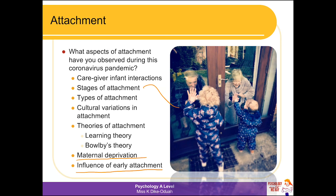If children haven't been able to form strong bonds during this time, we might later see a rise in bullying or difficulties sustaining romantic relationships. On a positive note, the current situation really does challenge the learning theory of attachment, which says we attach because of food. Children at home with parents who are now homeschooling them may be forming attachments for reasons beyond provision, suggesting there are multiple layers to attachment.